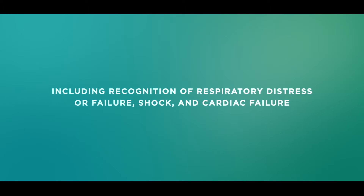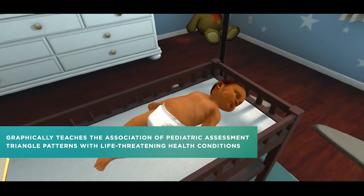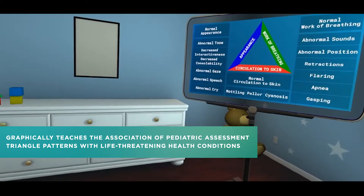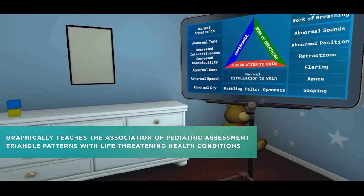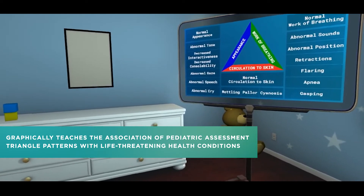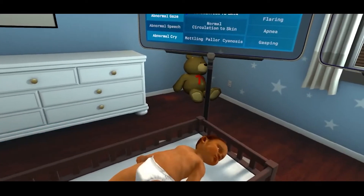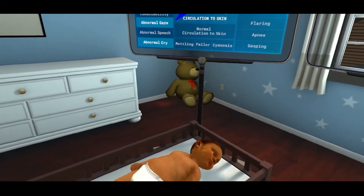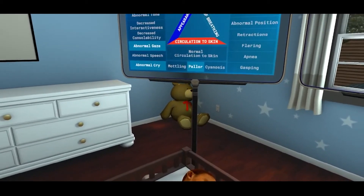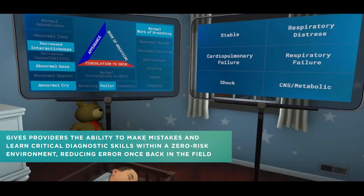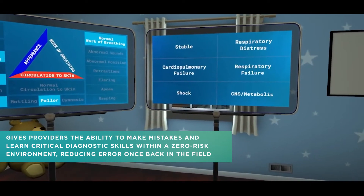The patient is four months old. His respiratory rate is 64. We've got an abnormal cry and an abnormal gaze. Pallor and cyanosis are also noted. Based on your assessment, identify the health state that best correlates with your findings.